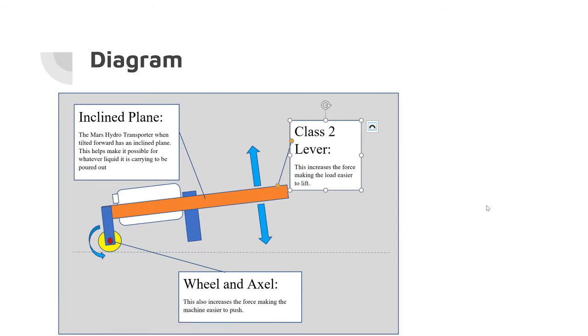This machine has an inclined plane, a class 2 lever, and a wheel and axle.